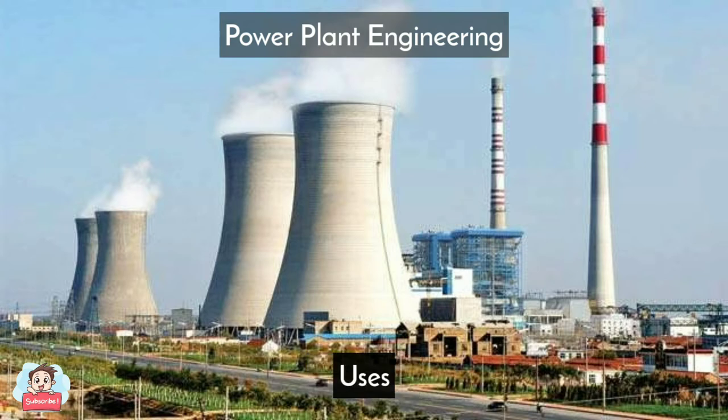What are Power Plants used for? Nuclear Power Plants use fission processes to generate electricity. In these plants, uranium nuclei are split which creates the thermal energy needed to create steam. It then works just like fossil fuel power plants, where the steam spins a turbine, generating electricity.